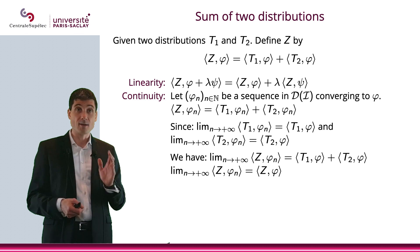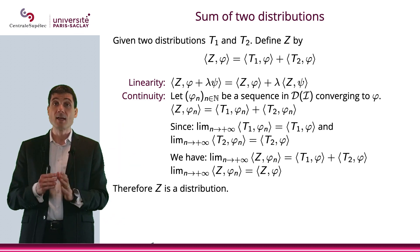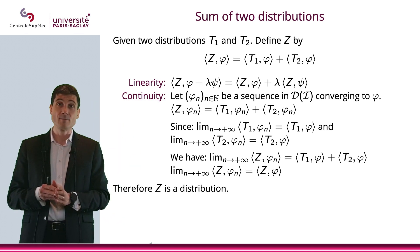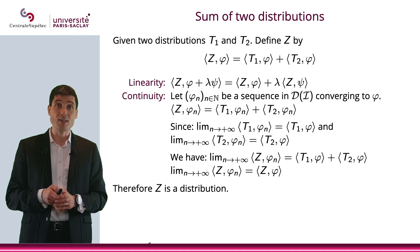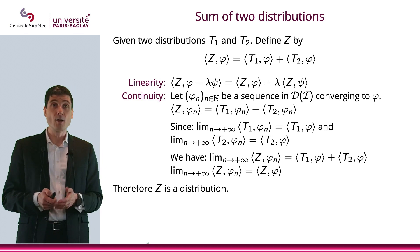So what I will have is that Z applied to φₙ will converge toward Z(φ). In other words, Z, defined as above, is a distribution.